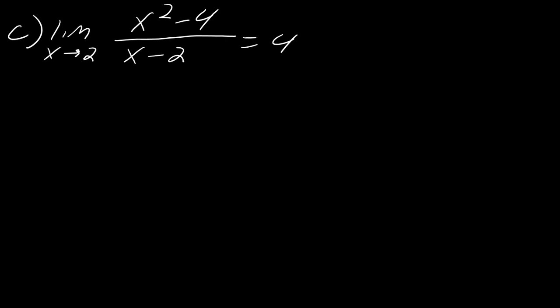For the last one, you might want to pause the video to convince yourself of this limit value. Notice that x squared minus 4 over x minus 2 can be simplified to x plus 2. Take a second to convince yourself of that if you're not already. This simplification is going to help us as we work through this.